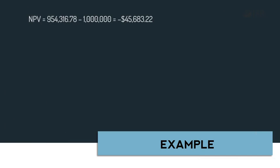The PV function returns a value of $954,316.78, which is the present value of annual inflows of $200,000 for the next 9 years. To get the NPV of this project, we need to subtract the initial investment of $1,000,000 from the present value of $954,316.78. We do not have to discount the initial investment as it is already measured in present value terms.